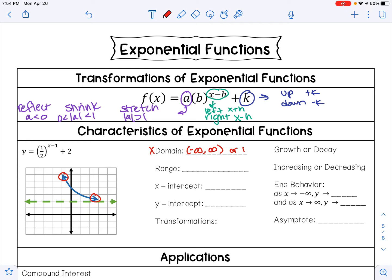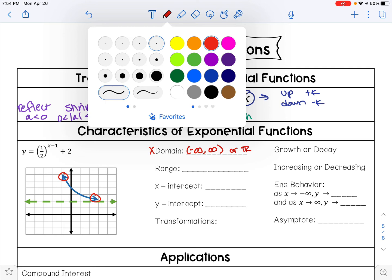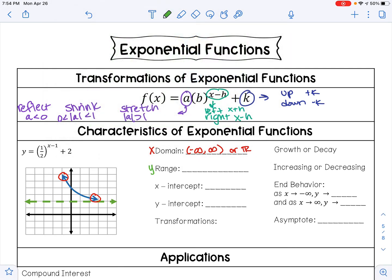Our range is our y values from the bottom of the graph to the top. The bottom of our graph is our asymptote, and that is where y equals 2. Our graph is going up forever, so that's going to infinity.